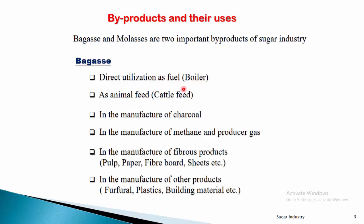Second, bagasse can be used as animal feed — that is, cattle feed, as a food material for animals. Third, bagasse can be used in the manufacture of charcoal, where it serves as a raw material in charcoal preparation.